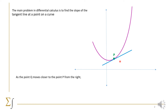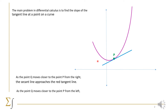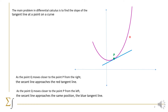As Q moves from the right side and gets closer to P, the secant line approaches the red tangent line. The same happens as Q gets closer to P from the left side — the secant line joining Q and P will coincide with the blue tangent line. In fact, we see that the blue and the red tangent line are the same limit to the secant, whether from the left or from the right.